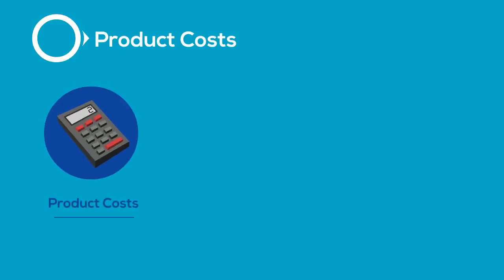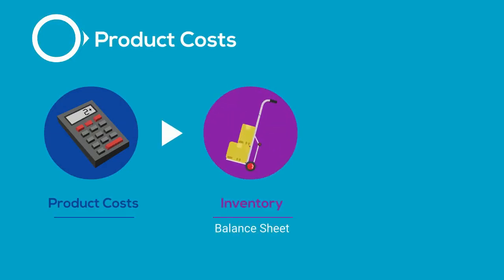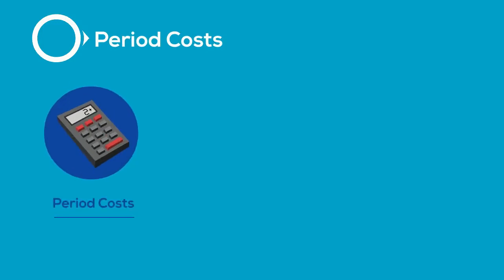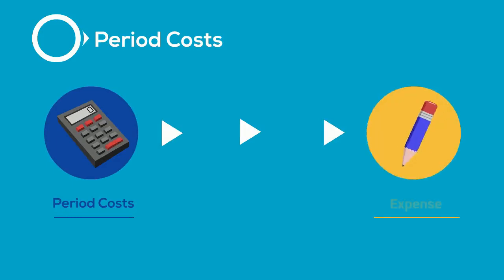Manufacturing costs can also be referred to as product costs — these are all the costs of making the product. These costs remain in a company's inventory while the product is being made and until it is sold; once the product is sold, these costs become an expense. All the other costs — those non-manufacturing costs — are also called period costs. These costs are not included in inventory but instead are immediately expensed.